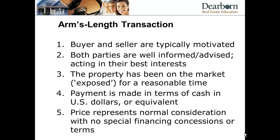The fourth requirement is that payment is made in cash in U.S. dollars or the equivalent, so there's no barter where it's unclear what a bartered item was worth. Finally, there should be no special financing concessions or terms — or if there are, they are adjusted for. The seller may offer to carry a portion at a lower interest rate, and you can calculate the implied difference in price from that lower-interest loan and adjust for it.